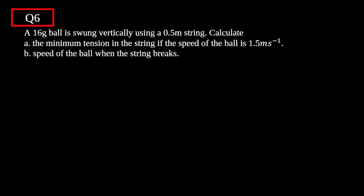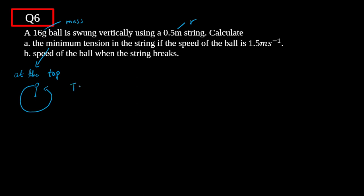The last question involves circular motion. A 16 gram ball is swung vertically using a 0.5 meter string, so the radius is 0.5 m and the mass is 0.016 kg. We need to calculate the minimum tension in the string if the speed of the ball is 1.5 m/s. Minimum tension occurs when the ball is at the top of the circular motion.